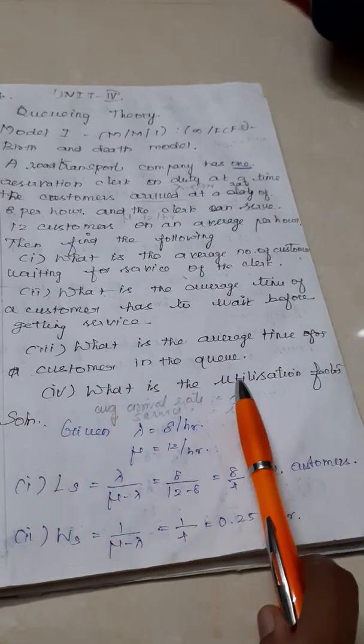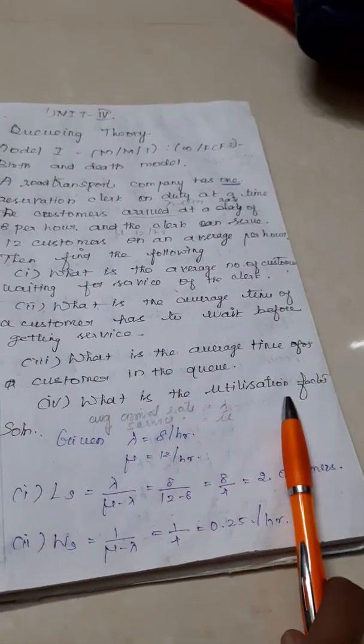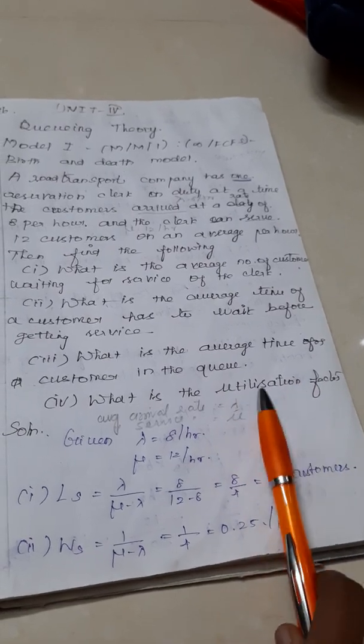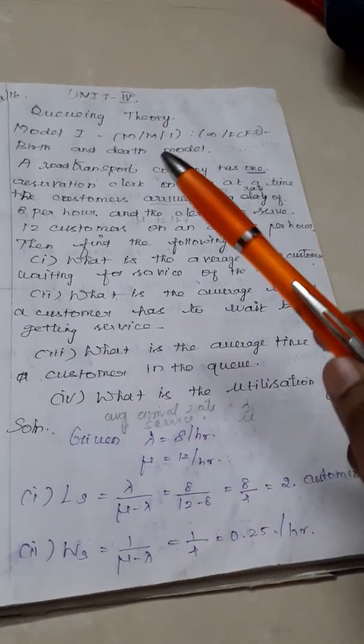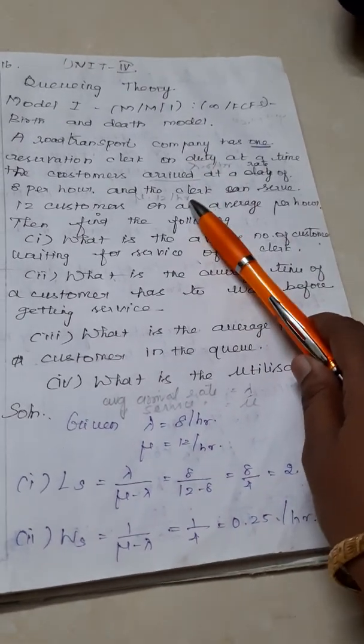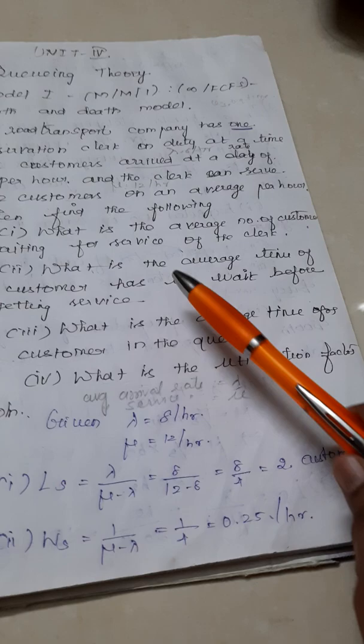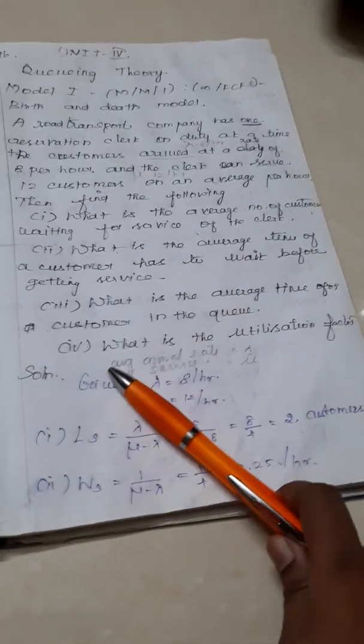Fourth subdivision, utilization factor. Utilization factor means probability for the system to be busy, that is rho. So this is how we have to find out lambda and mu values and the respective formula we substitute and hence we get the answer.